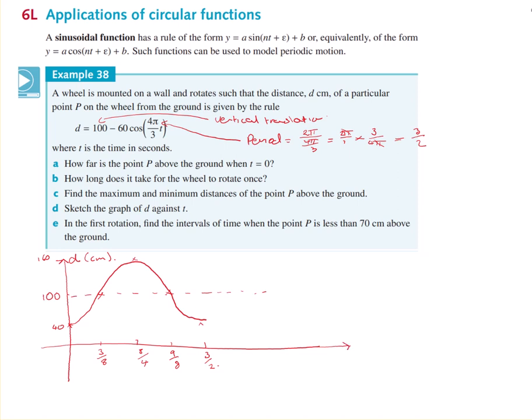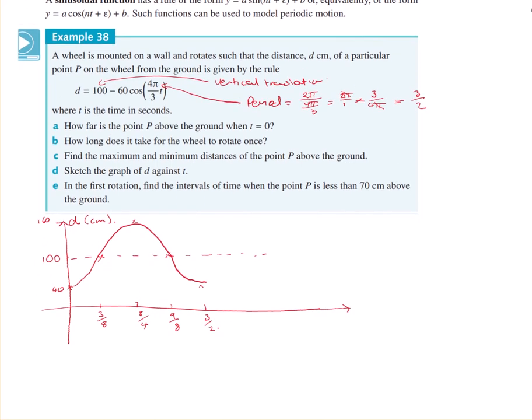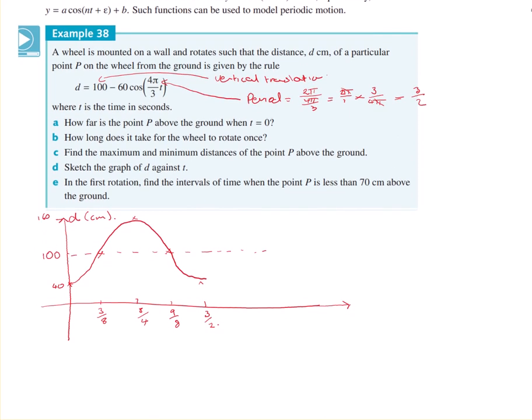Alright. So at t equals 0, so I'll now answer the questions. At t equals 0, how far is the wheel above the ground or the point P? And obviously it's 40 meters. So at t equals 0, d of 0 is equal to 40 centimeters.